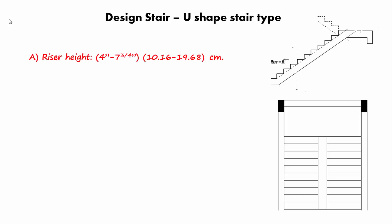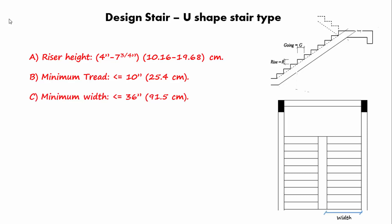The first recommendation is riser height — riser height should be between 4 inch and 7-3/4 inch, equivalent to 10.16 cm and 19.68 cm. The second recommendation is minimum tread should be not less than 10 inch, which equals 25.4 cm. The third is minimum stair width should be not less than 36 inch or 91.5 cm. The fourth is the stair needs to achieve this equation: 2 × riser + tread should equal 25 inch or 63.5 cm.